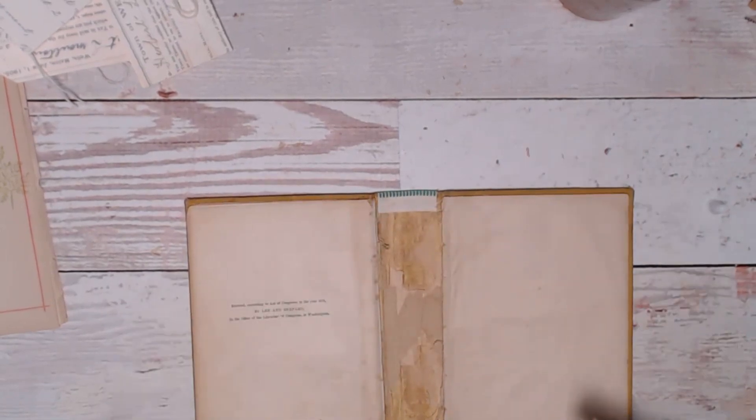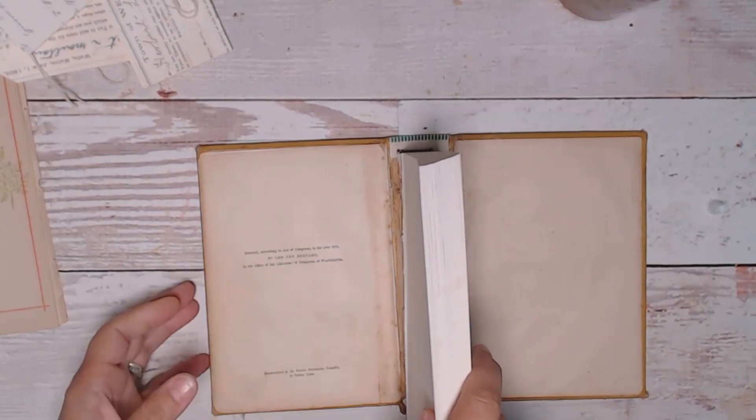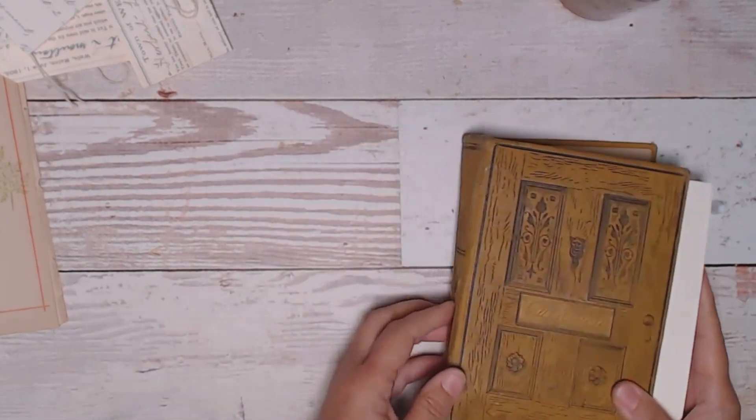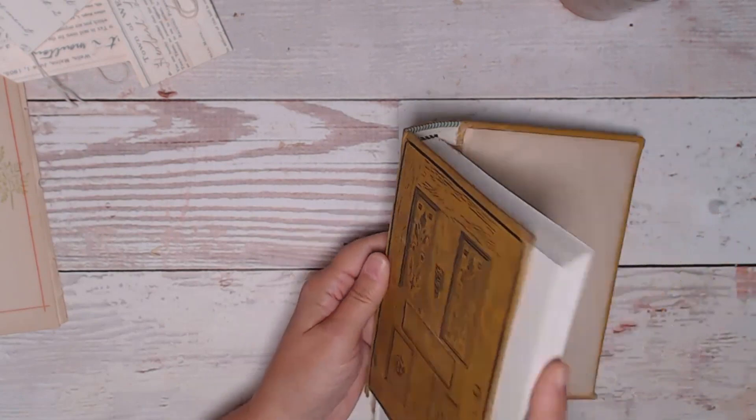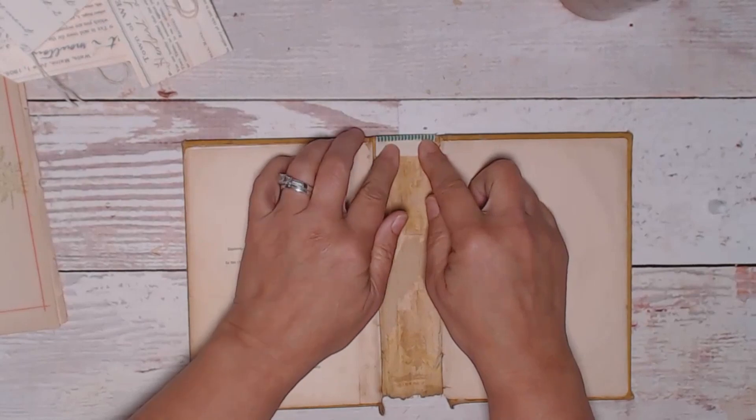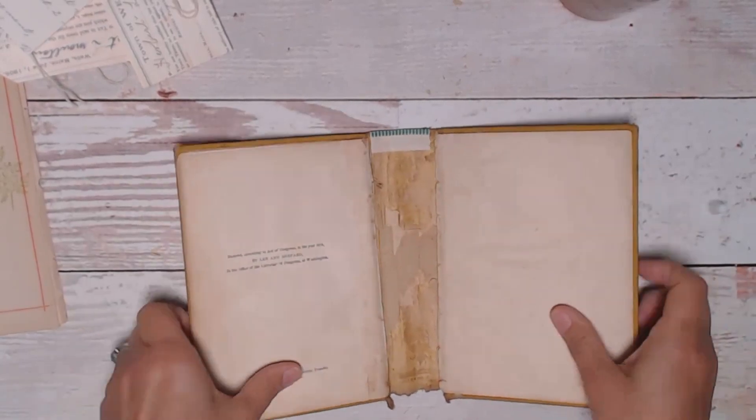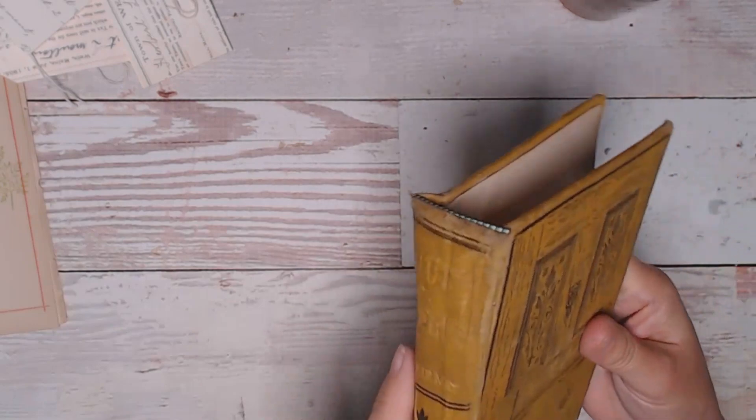And then just put it so it's barely peeking up above the book or even with it. And it's really that simple, guys. And then when you're ready to go ahead and put your text block in, just pretend this is my text block. I'm going to go ahead and sew my pages in through here or do a rounded spine. But this is the first step towards just dressing this up. Look at that.